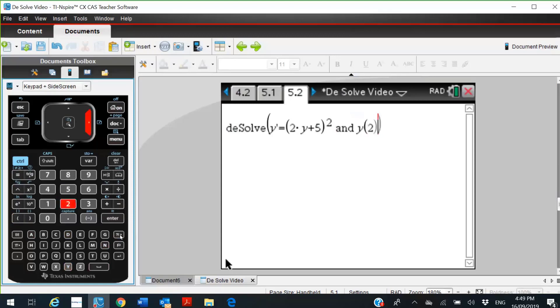Y of 2 equals 1, comma x, comma y. That's the syntax.